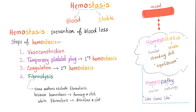What are the steps? First, you vasoconstrict the vessel. Then a temporary platelet plug — this is primary hemostasis, by platelets. And then coagulation — this is secondary hemostasis, by coagulation factors. And then fibrinolysis, which dissolves the clot and restores normal blood flow.